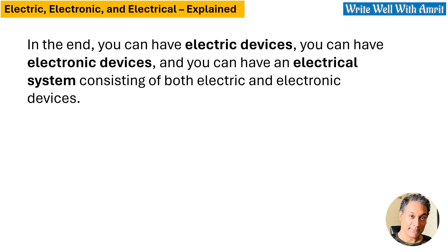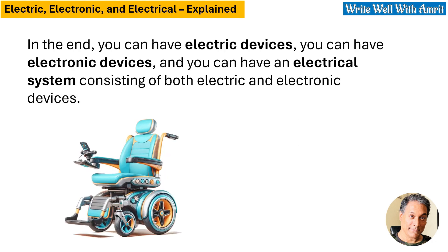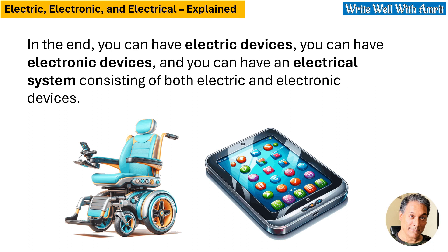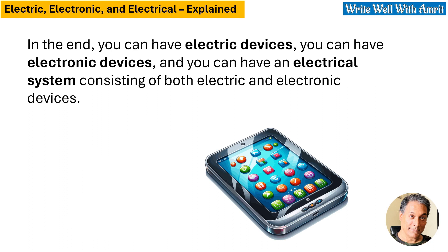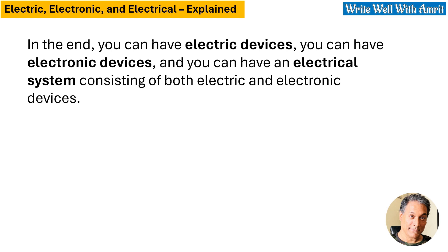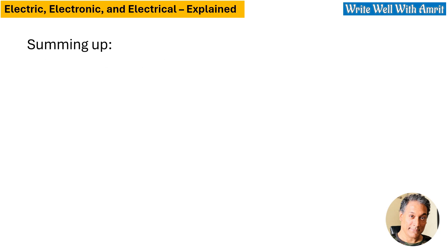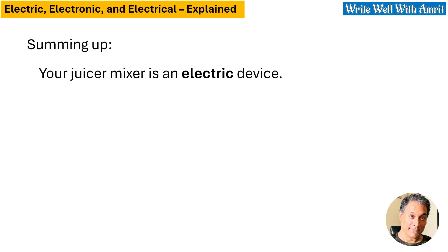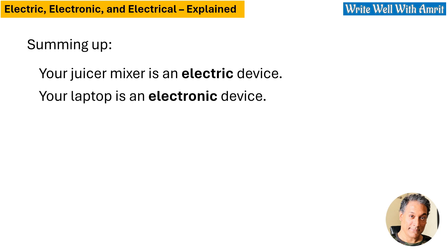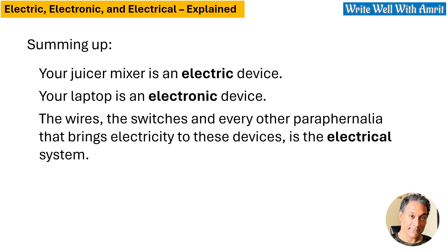In the end, you can have electric devices, you can have electronic devices, and you can have an electrical system consisting of both electric and electronic devices. To sum up: your juicer or mixer is an electric device, your laptop is an electronic device, and the wires, switches, and every other paraphernalia that brings electricity to these devices is the electrical system.